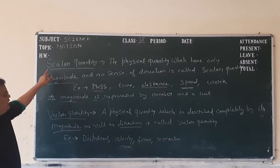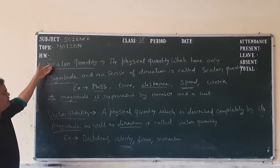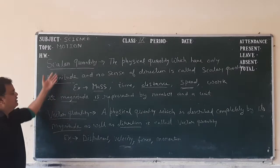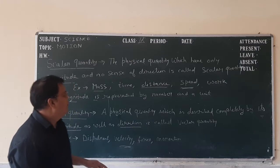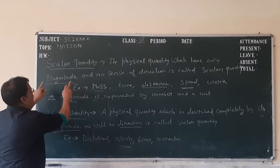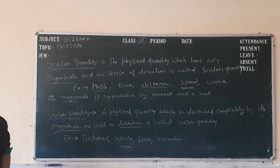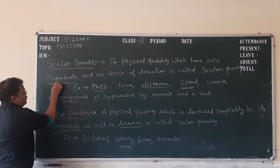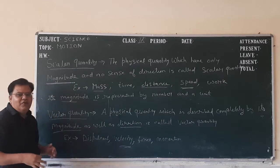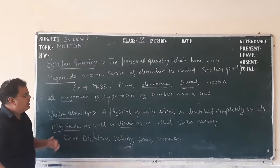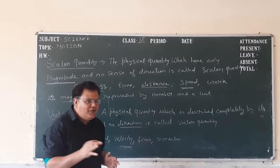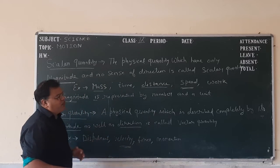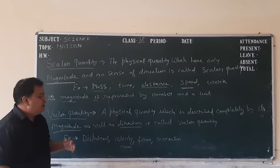Scalar quantity and vector quantity. Scalar quantity: the physical quantity which gives only magnitude — which gives only magnitude. Magnitude means only value, and there is no sense of direction. It means it gives only value, there is no direction. That type of quantity is known as scalar quantity.